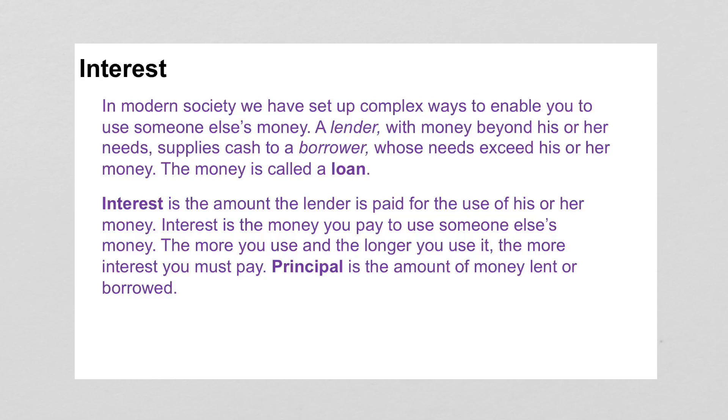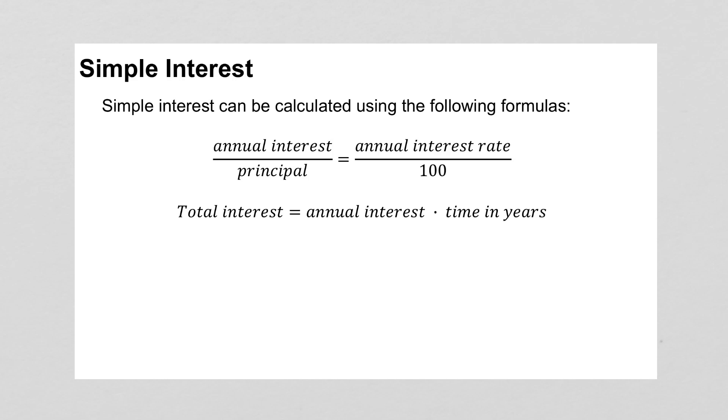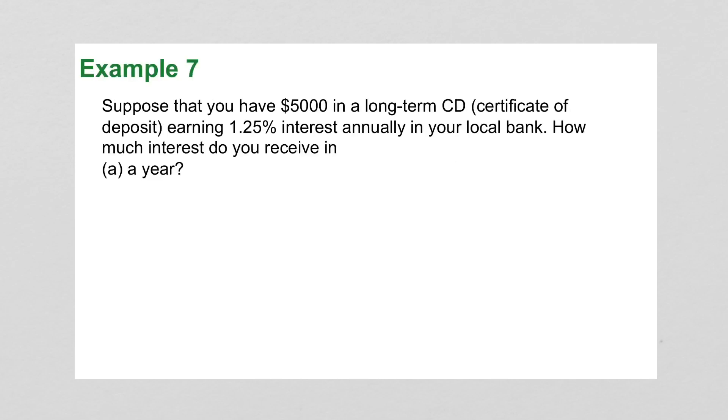Interest is the amount that the lender is paid for the use of his or her money. So if you take out a loan to borrow money from a bank, from a person, from whomever, then they are most likely going to charge you interest on that. Principle is the amount of money lent or borrowed. You might borrow $500 and have to pay 2% interest. Simple interest can be calculated using these two formulas. The actual interest over the principal equals the annual interest rate over 100. And the total interest would be the annual interest times the time in years.